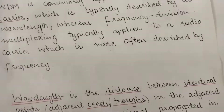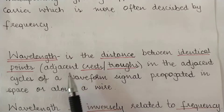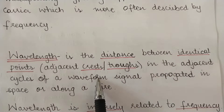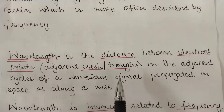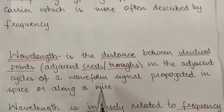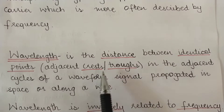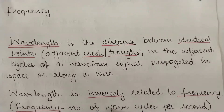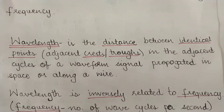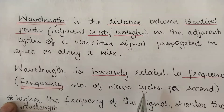Just a quick revision of wavelength: wavelength is the distance between identical points — the crests or troughs in adjacent cycles of a waveform signal propagated in space or along a wire. For wireless transmission, signals propagate in space; for wired transmission, they propagate along a wire. The distance between adjacent crests or adjacent troughs is the wavelength. Wavelength is inversely related to frequency — higher frequency means lower wavelength.